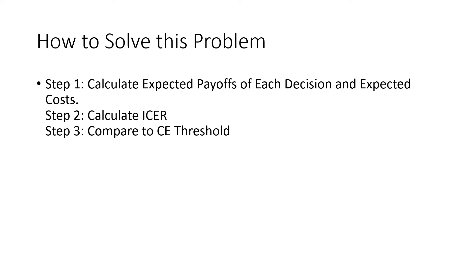The way we solve this problem is like before, we calculate our expected payoffs of each decision and our expected costs. Step number two is that we calculate an ICER and then we compare it to our CE threshold.